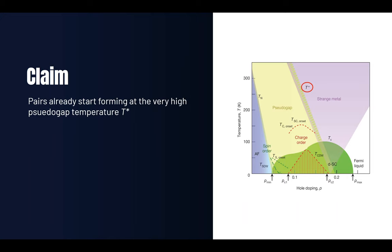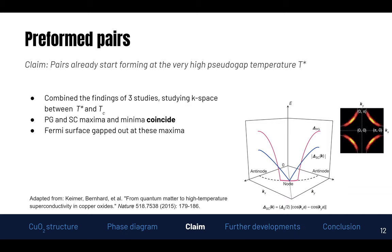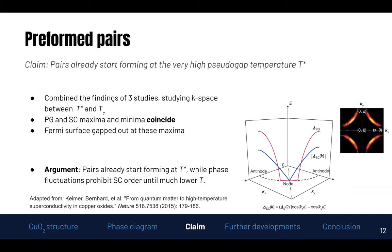So let's look at how they built their argument. First they combined the findings of three studies examining momentum space between T* and the critical temperature, summarized in a figure. We immediately see symmetries: both the pseudo-gap and the superconducting gap have the same symmetry around the node, and their maxima and minima coincide. Looking at the Fermi surface, it's gapped out where the pseudo-gap has its maximum. The argument is that pairs already start forming at T*, but phase fluctuations prohibit superconducting order until much lower temperatures.